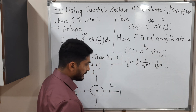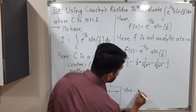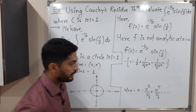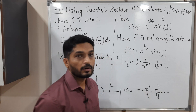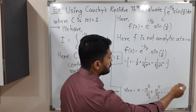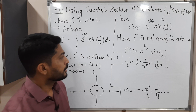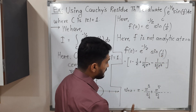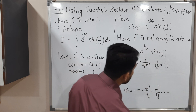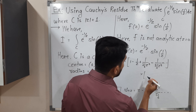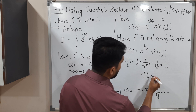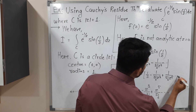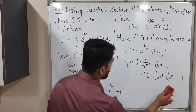The series for sin(z) is z - z³/3! + z⁵/5! - ... with odd powers of z and alternating signs. Since we have sin(1/z), we replace z by 1/z: sin(1/z) = 1/z - 1/(3! z³) + 1/(5! z⁵) - ...